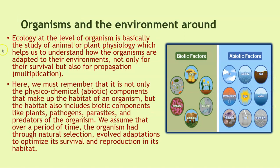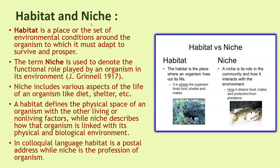Ecology at the level of organism is basically the study of animal or plant physiology, which helps us understand how organisms are adapted to their environments. We must remember that it is not only the physiochemical or abiotic components that make up the habitat of an organism, but the habitat also includes biotic components like plants, pathogens, parasites and predators. Over time, organisms have through natural selection evolved adaptations to optimize survival and reproduction in their habitat.